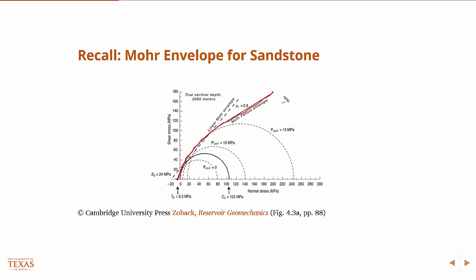Of course, the Mohr Coulomb failure criteria is the linearized version, so it's this line.